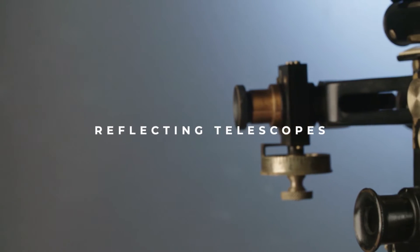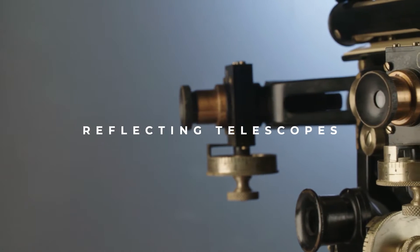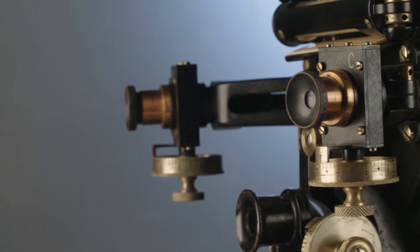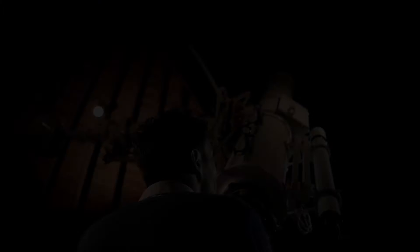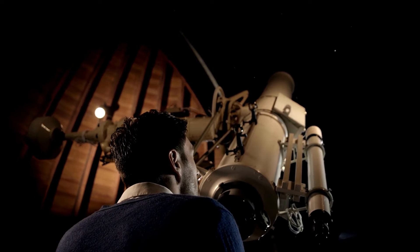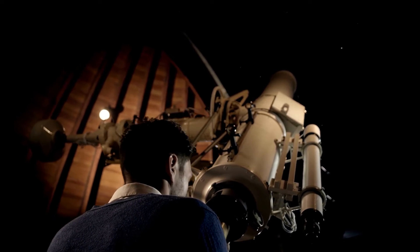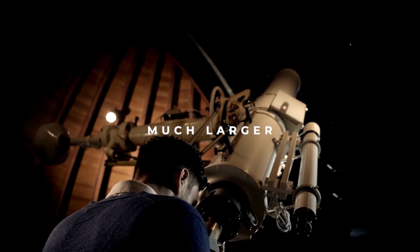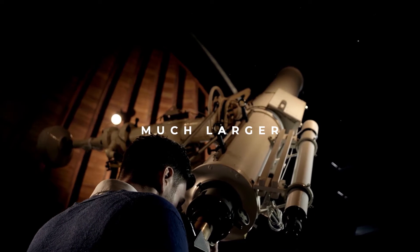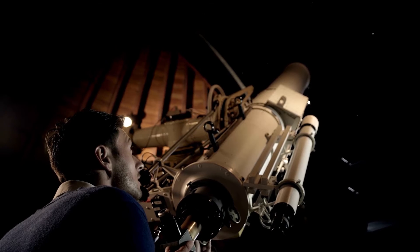Reflecting telescopes, on the other hand, use a combination of mirrors to capture and reflect light and then magnify it. This type of telescope is used for astronomical observations and can be much larger than refracting telescopes, allowing for higher magnifications and larger images.